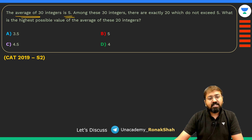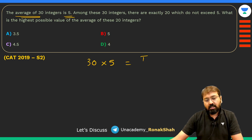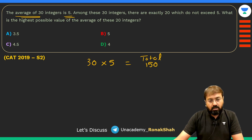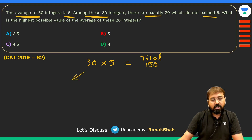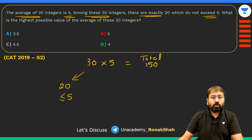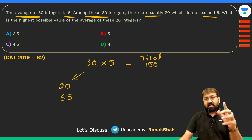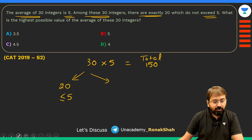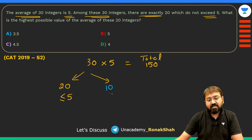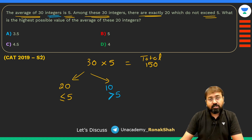The average of 30 integers is 5, so the total is 150. Among these 30 integers, exactly 20 do not exceed 5 — meaning their values are less than or equal to 5. The remaining 10 integers must therefore be greater than 5.